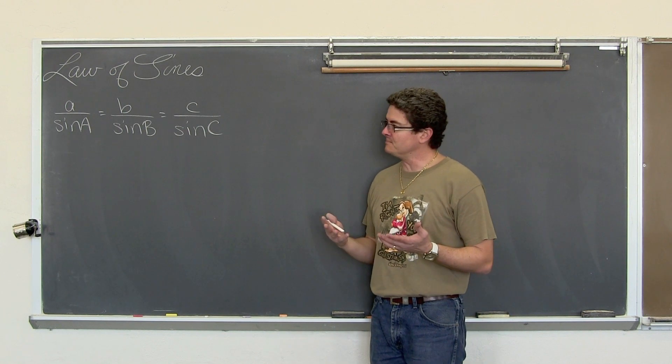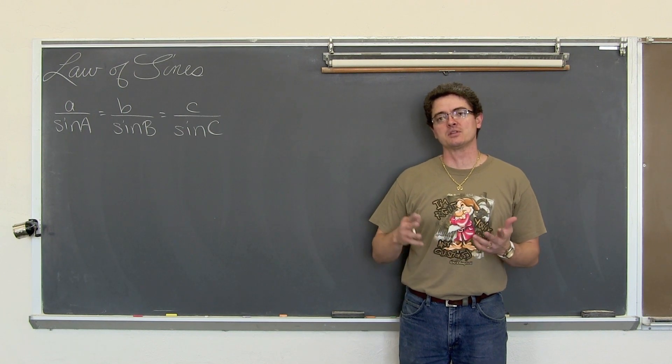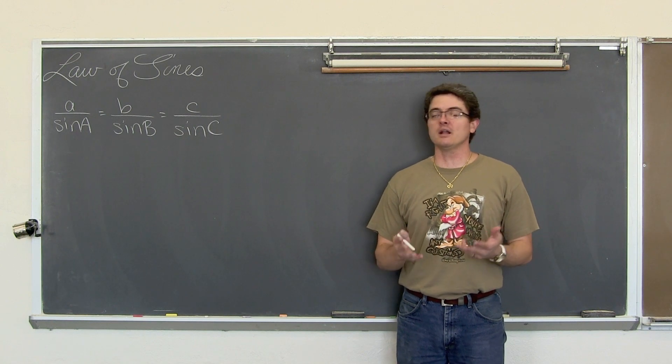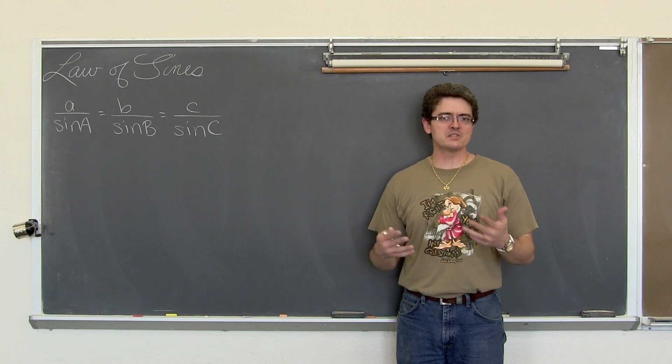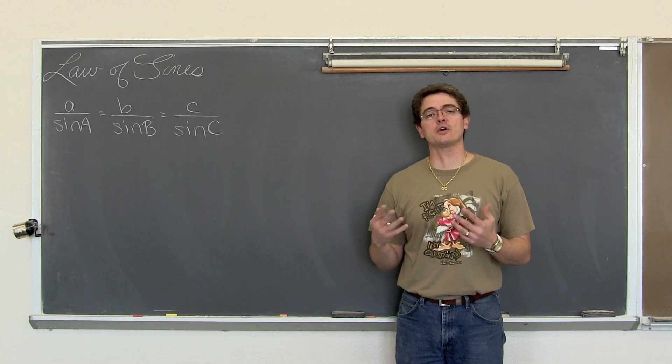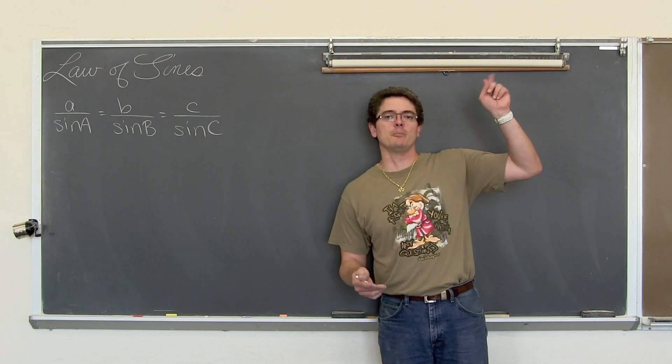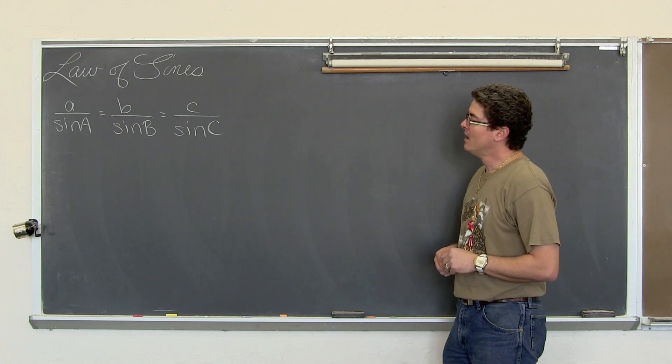Then we will set up another fraction based on whatever missing parts of the triangle we are dealing with. Not all oblique triangles can be solved using the Law of Sines. If you cannot use the Law of Sines, then you use the Law of Cosine which is in another video.